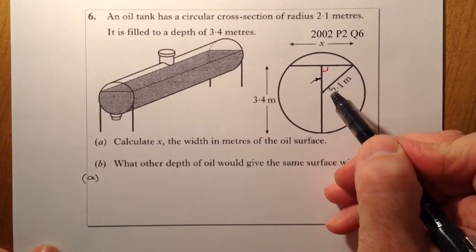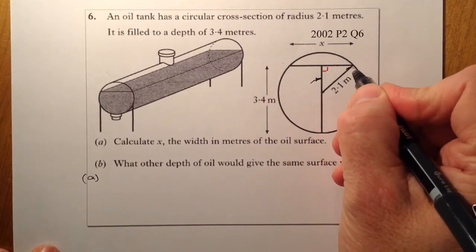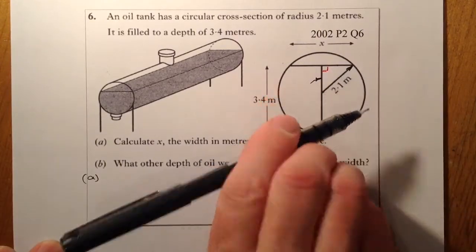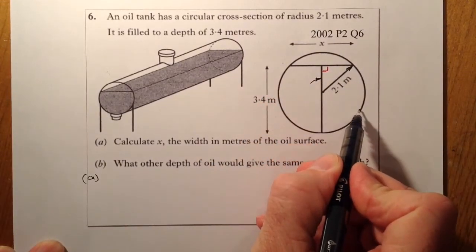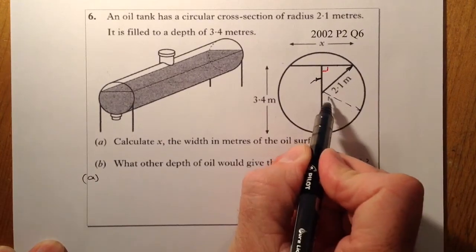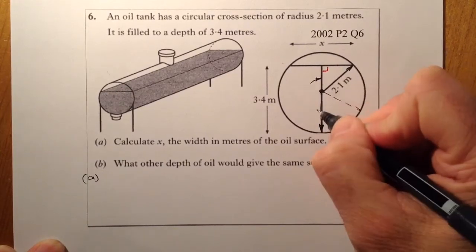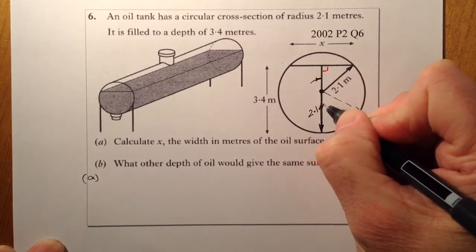I know that I've got a radius here, so the radius goes from the centre of the circle out to the circle. So no matter where that goes, it will still be 2.1 from there to outside the circle. So from here to here, that one there will still be 2.1 metres.